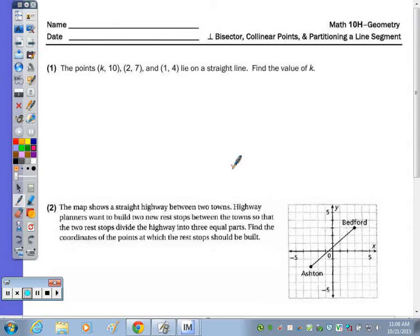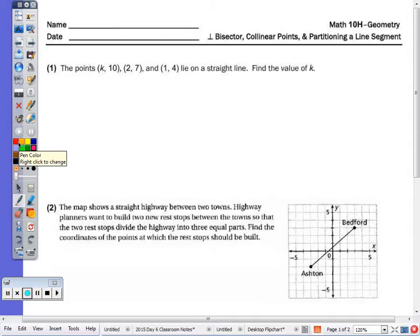Question number one. The points k, 10, 2, 7, and 1, 4 lie on a straight line. So that's stating that they are collinear. Find the value of k.